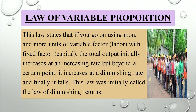This law states that if you go on using more and more units of a variable factor like labour with a fixed quantity of another factor like capital, the total output initially increases at an increasing rate, but beyond a certain point it increases at a diminishing rate and finally it falls. So this law was initially called the law of diminishing returns.